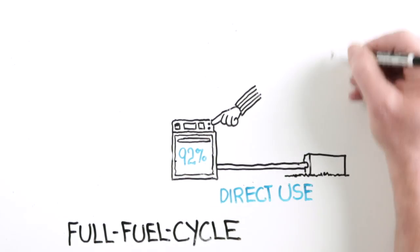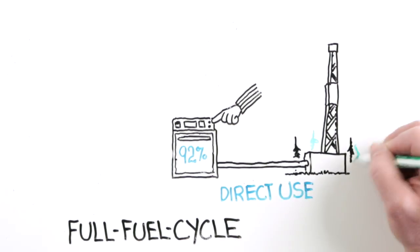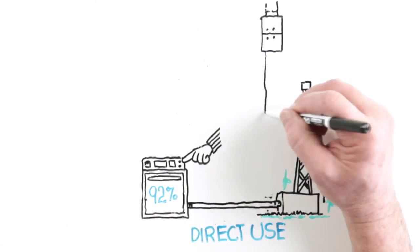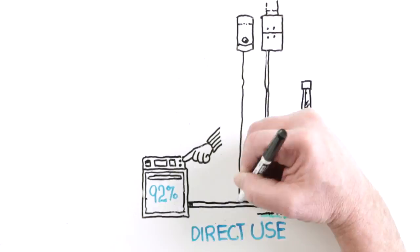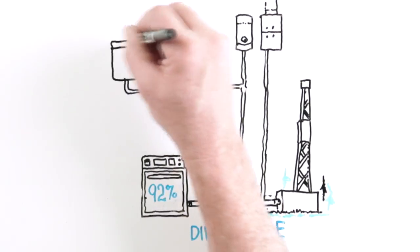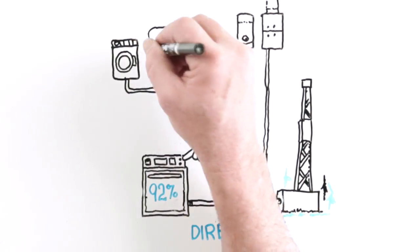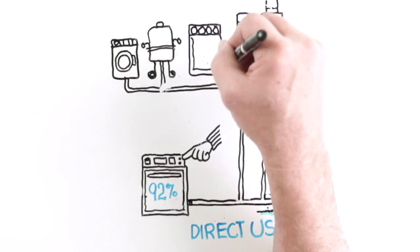For homes that use natural gas to power appliances like a water heater and a furnace, that energy arrives directly to your appliances after a journey through pipelines that does little to reduce its energy efficiency. Now, what can you do to use more of this efficient fuel source?